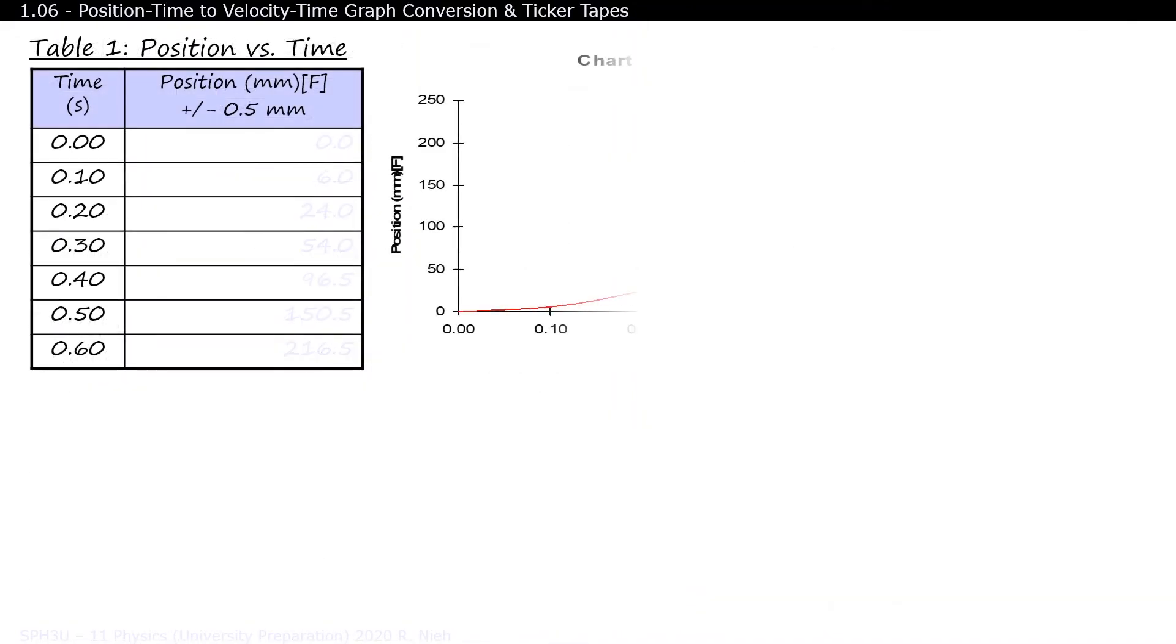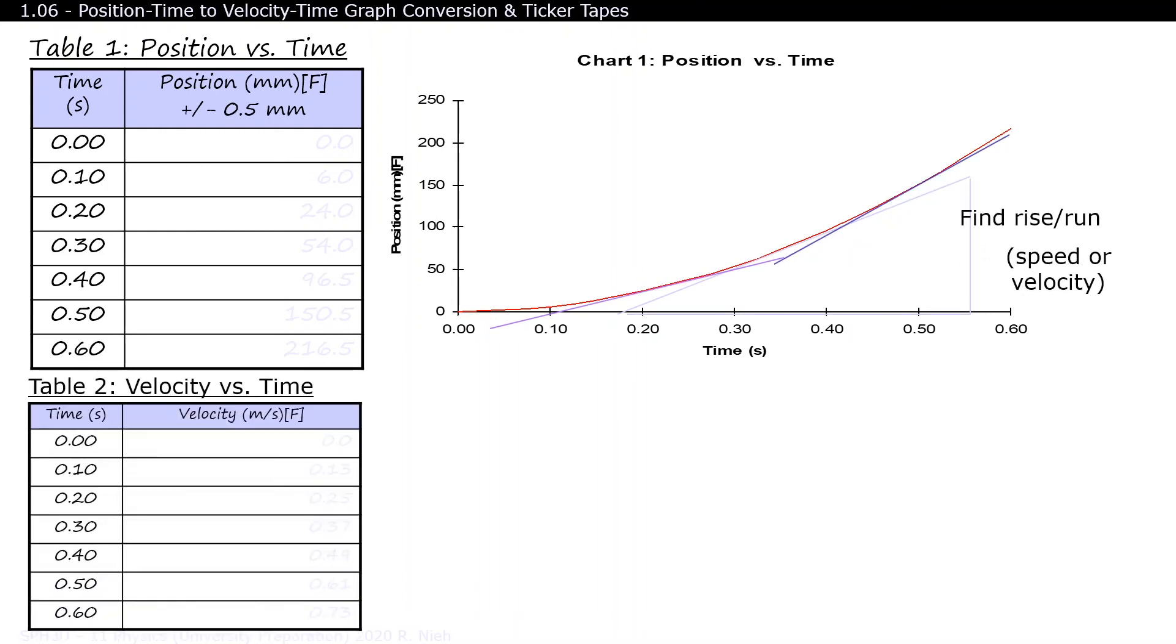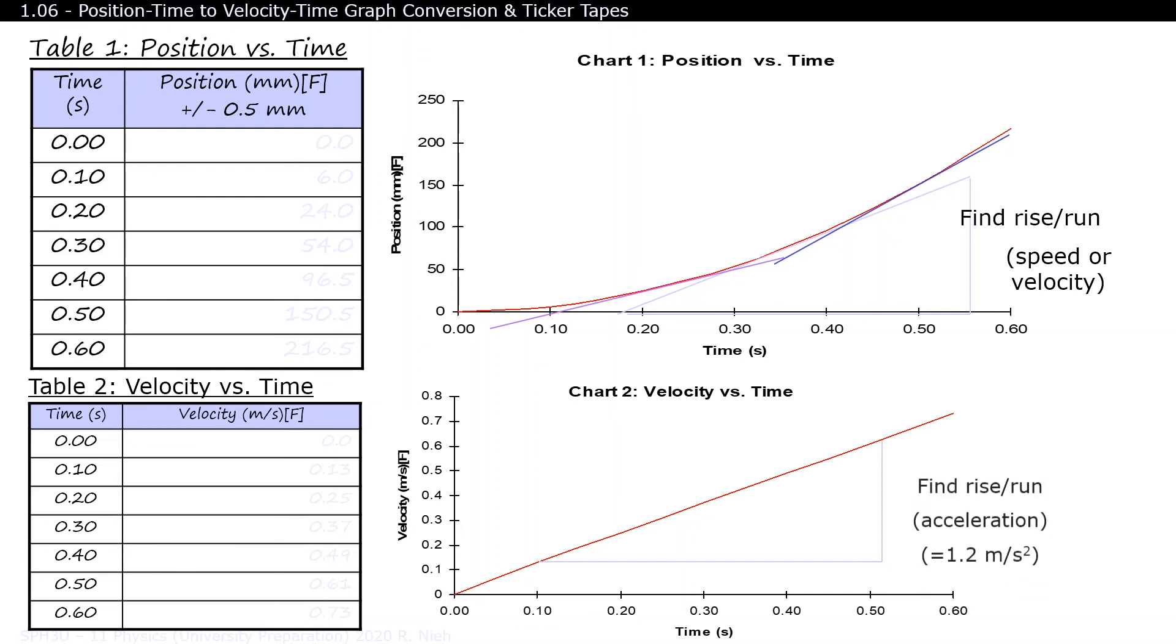With this data, create a position time graph, draw three tangents, and transfer your calculations onto a velocity time graph. Draw a line of best fit on the velocity time graph and measure its slope. Compare your calculated slope with a theoretical value of 1.2 meters per second squared, and see if you can achieve a winning percentage deviation score of 10% or less.